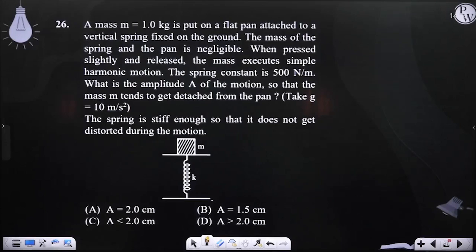What is the amplitude of motion so that the mass tends to get detached from the pan? Take g = 10 m/s². The spring is stiff enough so that it does not get distorted during the motion.